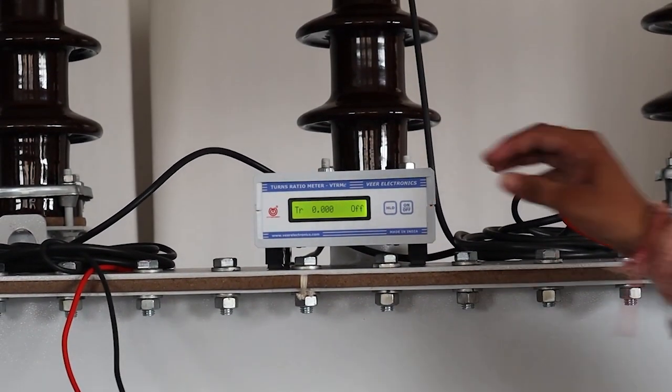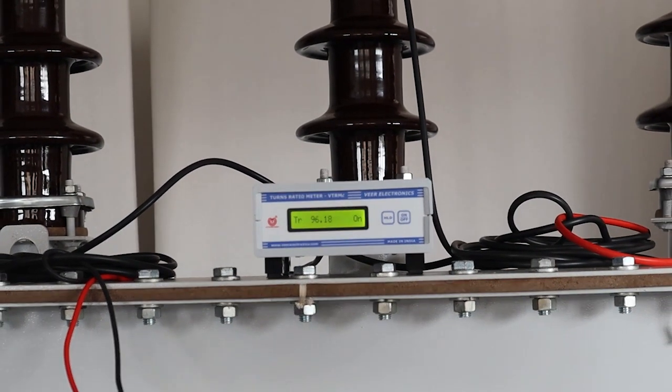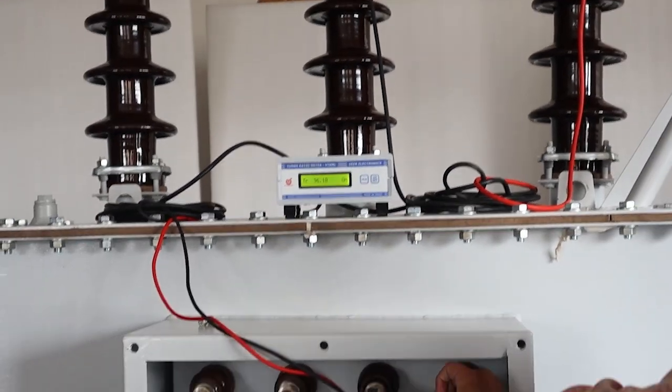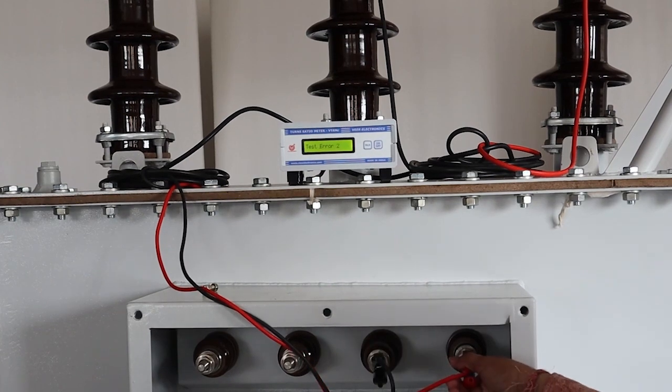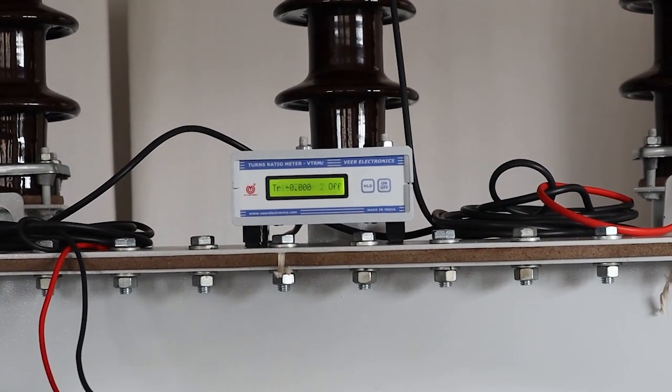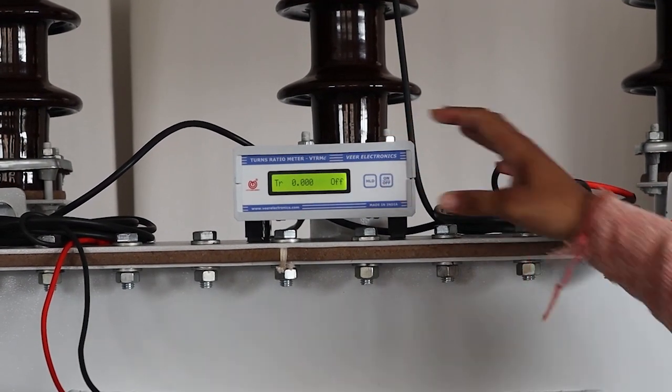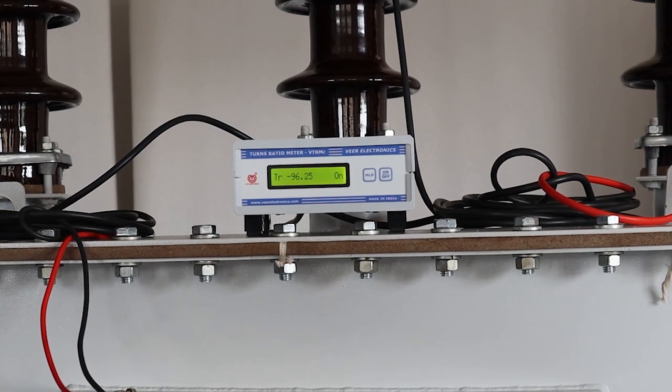On display, TR will show the calculated ratio. In case of reverse polarity, a minus sign will appear on display.